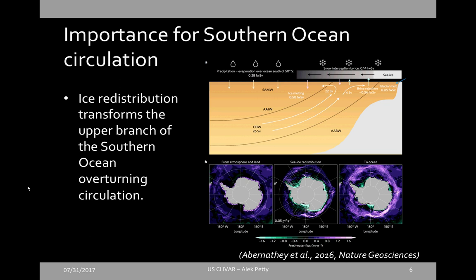So sea ice is important for the Southern Ocean. Another paper that came out at virtually the same time in Nature touched on the same issue but went one step further. They used observations and models to look at the drivers of sea ice fresh water transport.